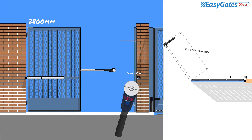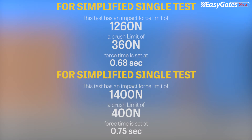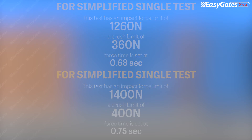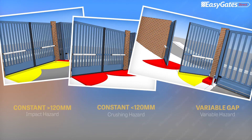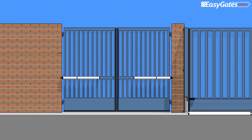The swing gate full speed impact test assesses the suitability of lower rail hazards, such as crush hazards on small gaps, impact hazards on larger gaps, and variable hazards on gaps that can change with motion. The edges used here should be of the same type used on the closing edge to ensure safe values are met.